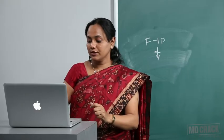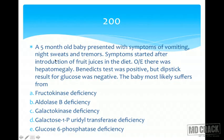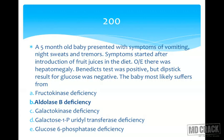Next question: a five-month-old baby presented with vomiting, night sweats, and tremors after introduction of fruit juices in the diet. On examination there was hepatomegaly; Benedict's test was positive but dipstick for glucose was negative. The answer is aldolase B deficiency — hereditary fructose intolerance. Fructose-1-phosphate accumulates because aldolase B cannot break it down further.